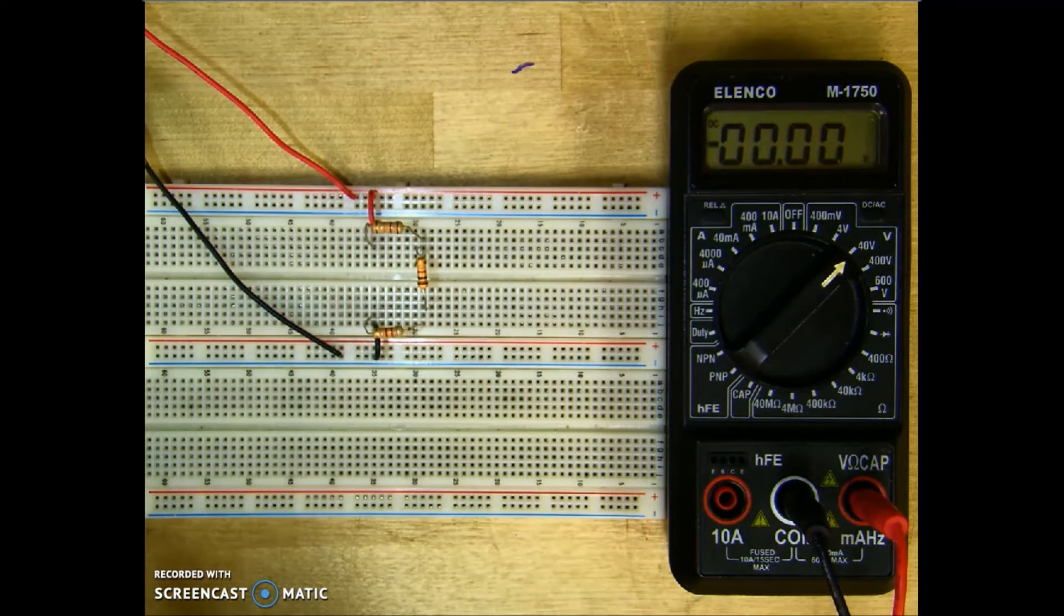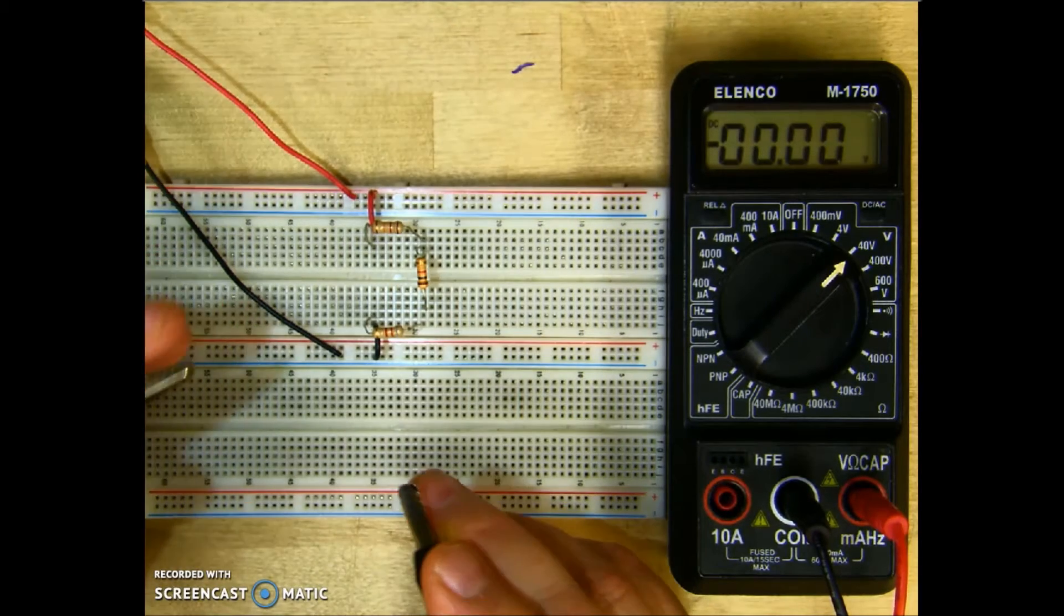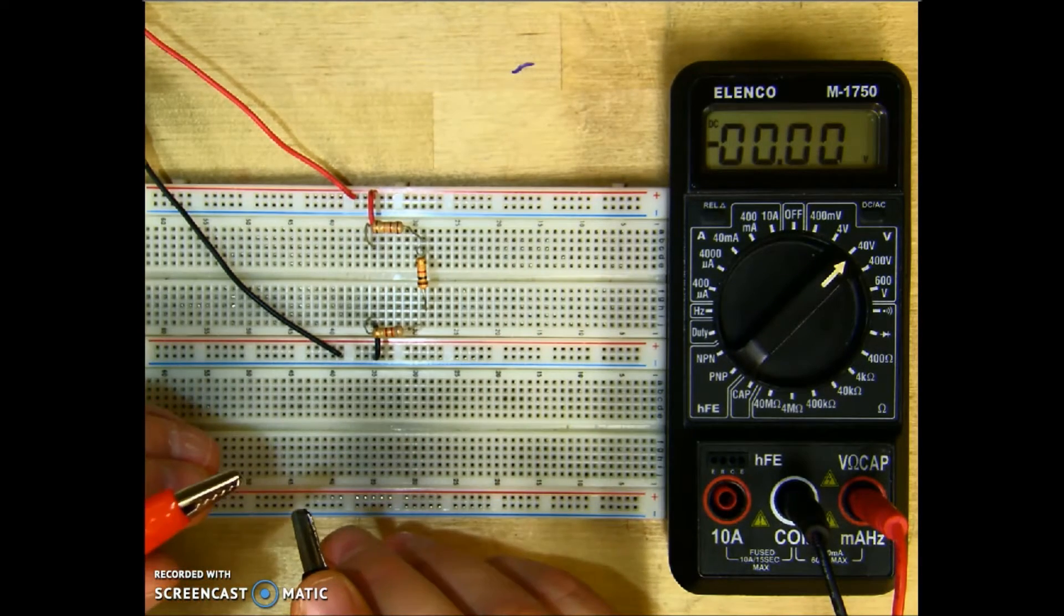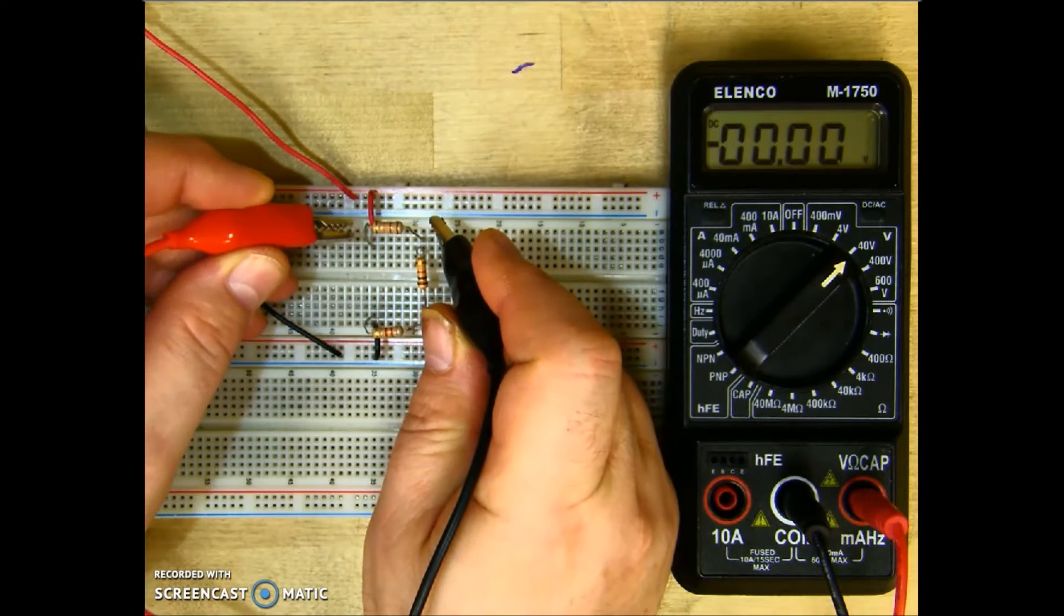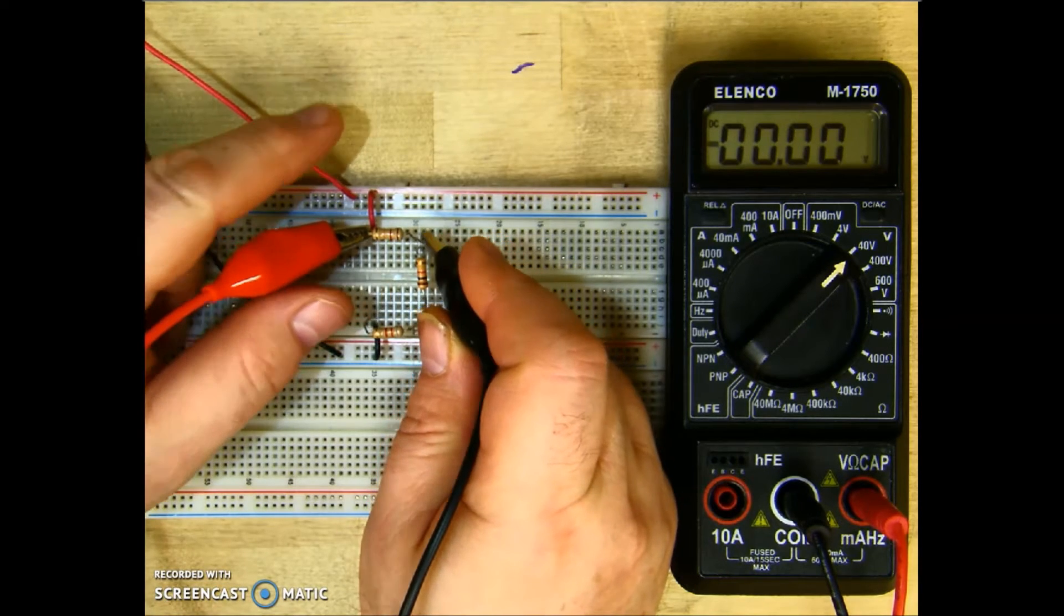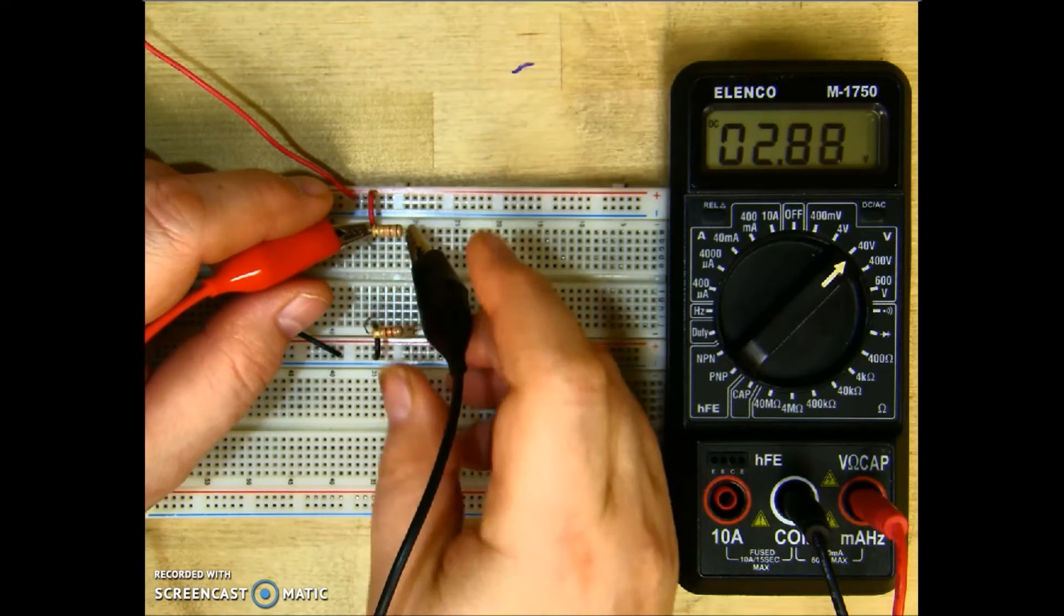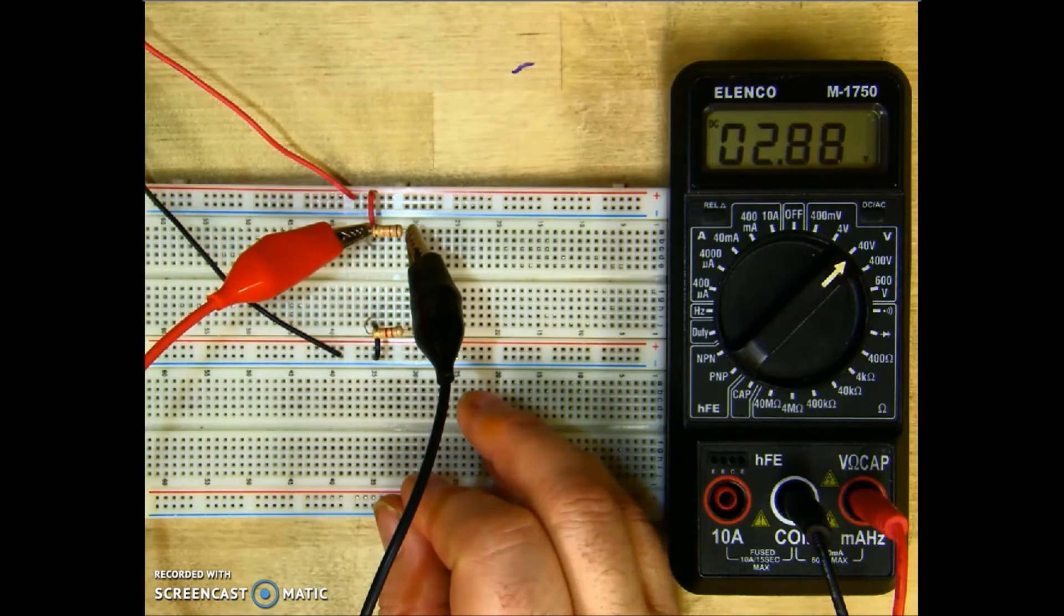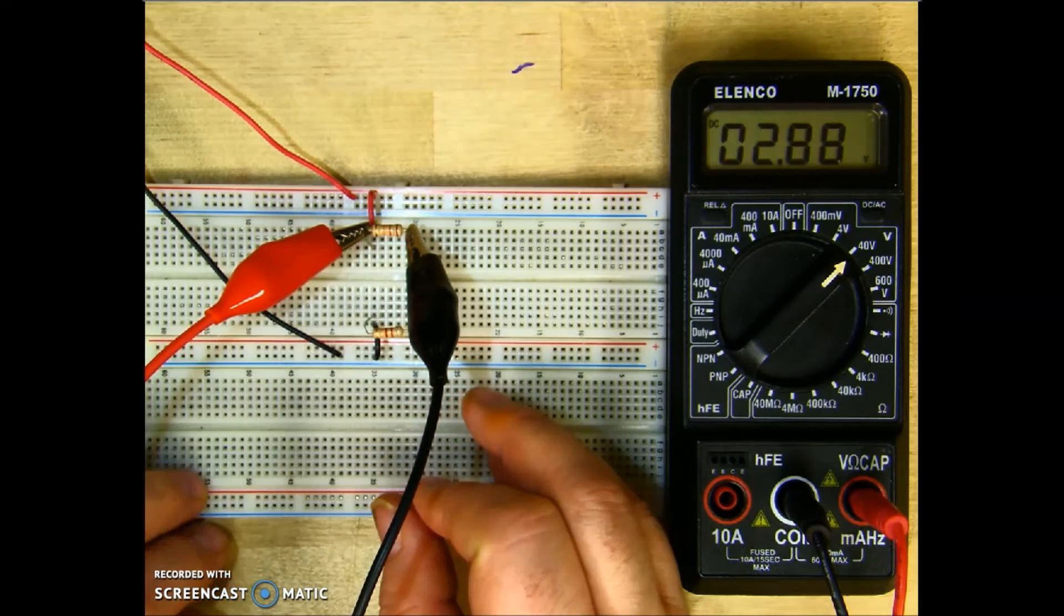Now let's go ahead and measure our individual voltages across the resistors. Now voltage remains the same in parallel. So I'm going to hook my meter up, my positive lead closest to the positive source, and my negative lead to the other side of the resistor. And I see that I have 2.88 volts dropped across that resistor.